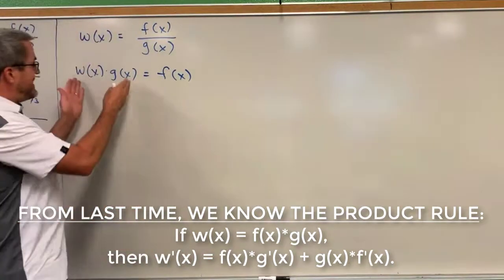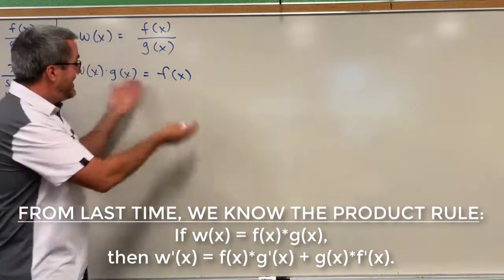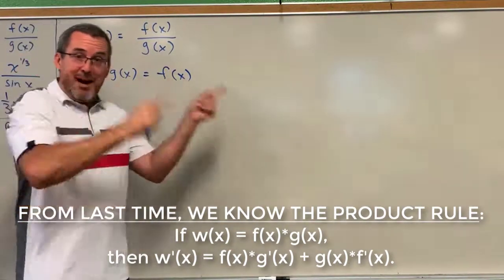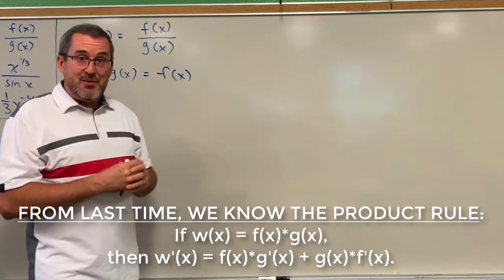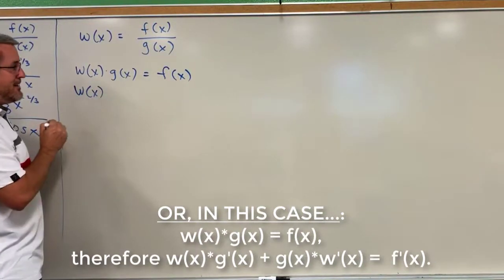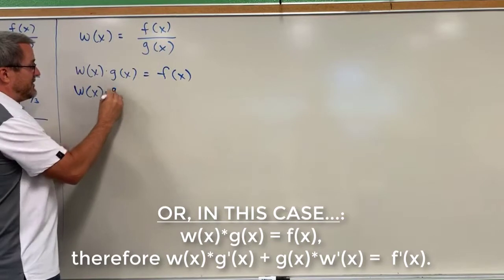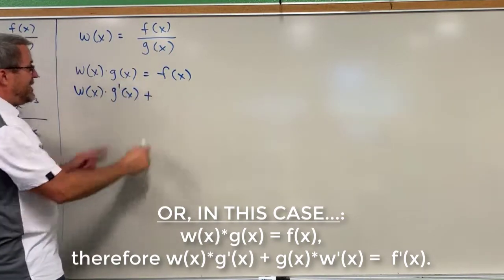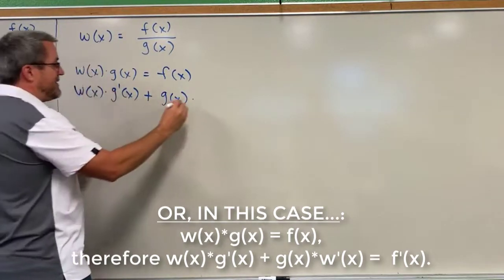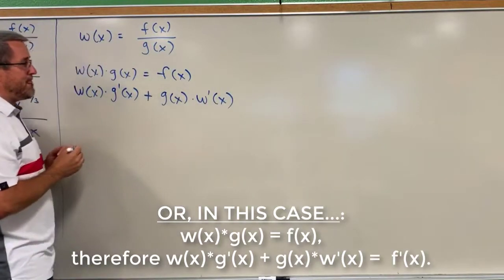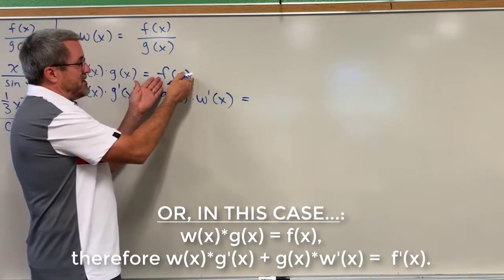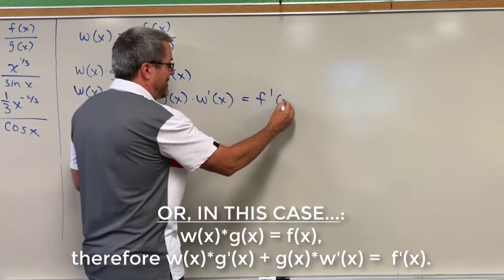On the left side, notice we've got our product. So if you haven't studied the product rule, go back and watch that video. We take the first function as it is, multiply it by the derivative of the second function, plus we take the second function as it is and multiply by the derivative of the first function. On the right side of the equation, the derivative of f of x is just f prime of x.